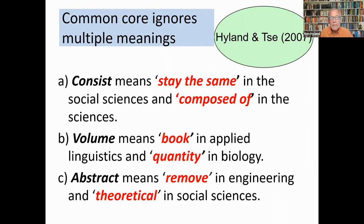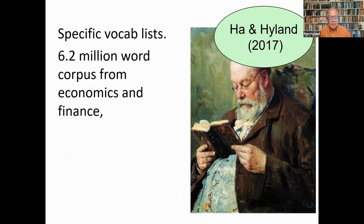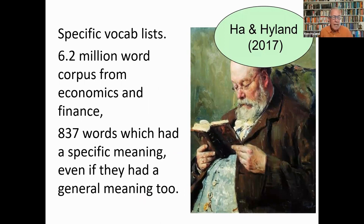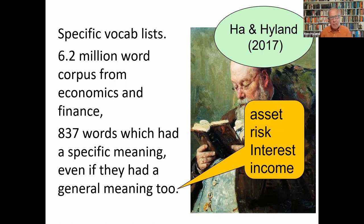One example is Althea Ha's study of a six-million-word corpus from economics and finance, where we found 837 words which had a meaning specific to these two fields. Many of these words, however, often had a general everyday meaning very different from their specialized meaning. Words like 'asset', 'risk', 'interest', and 'income' are used as everyday terms, but they have specific meanings in these fields, which can create confusion for students and for everybody else.